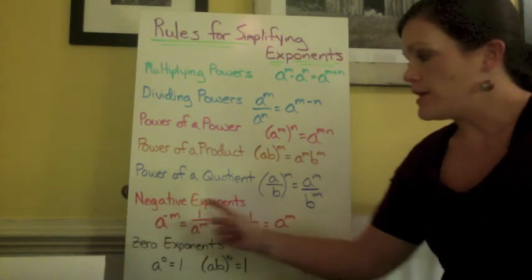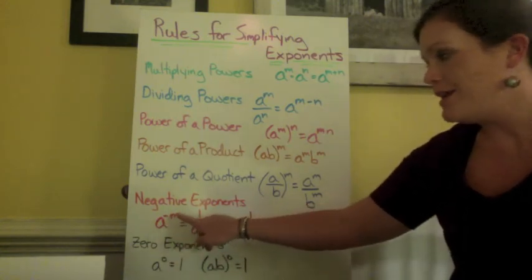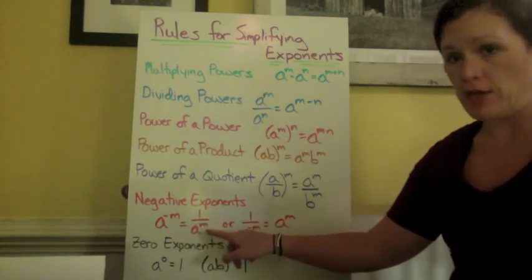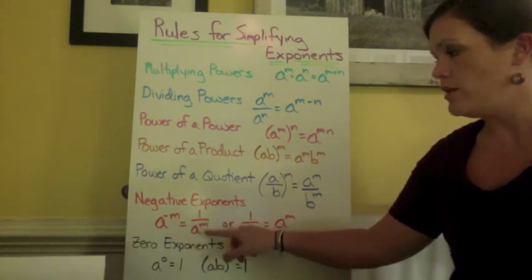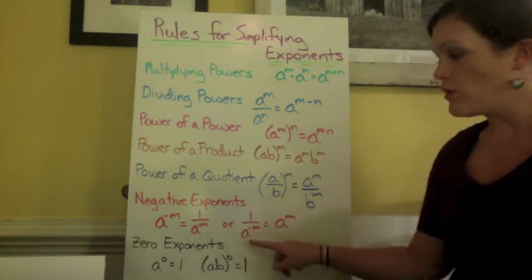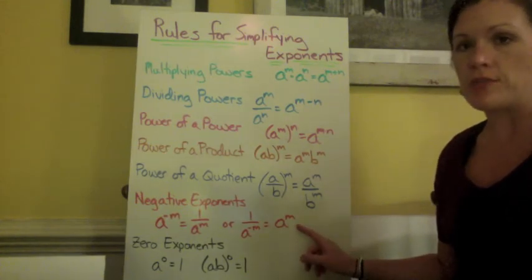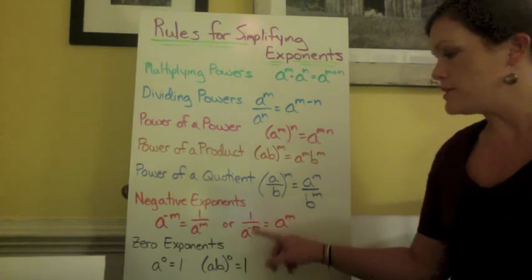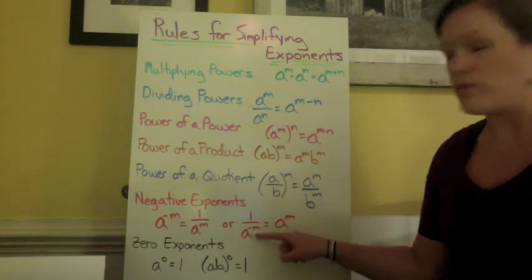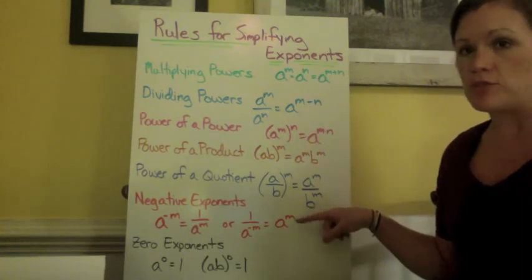The negative exponents have to be taken care of a little differently. If we have a to the negative m power, we have to fix it by putting it in the denominator. So we would write it as 1 over a to the m power and it would be positive. Or if it's already in the denominator, we then need to move it to the numerator to make it positive.